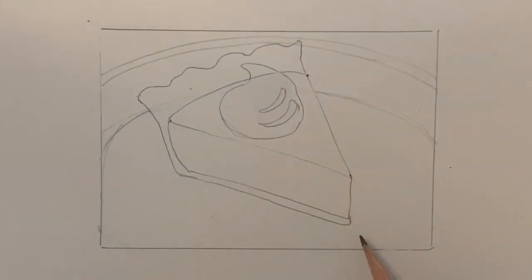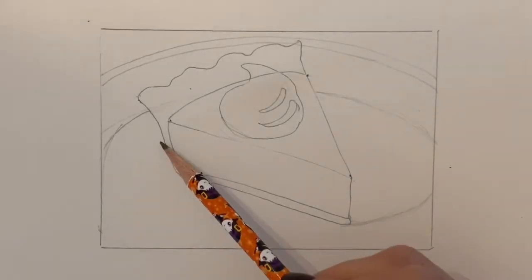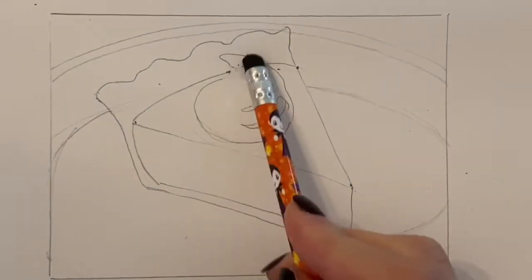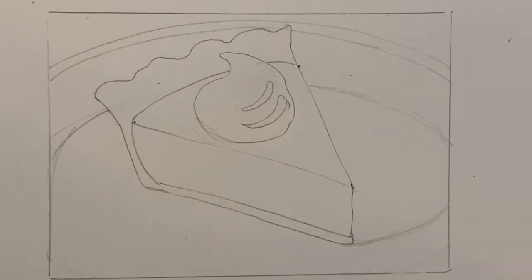Speaking of shadows, I'm going to have a bit of a cast shadow come off from the pie piece onto the plate so I'm going to show where that would be. Any lines that need to be erased with pencil, I'll erase now and then I'll move on to adding some color.